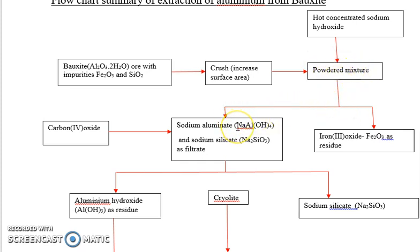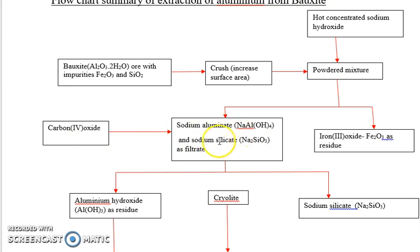Sodium aluminate and sodium silicate are formed as the filtrate, and iron(III) oxide is formed as the residue. Carbon dioxide is then added to the filtrate, precipitating out aluminium hydroxide as the solid, with sodium silicate remaining as the filtrate.